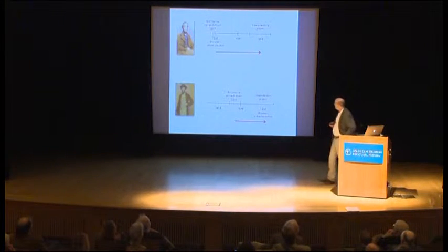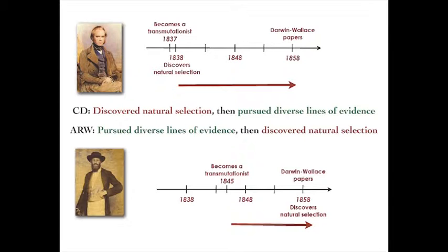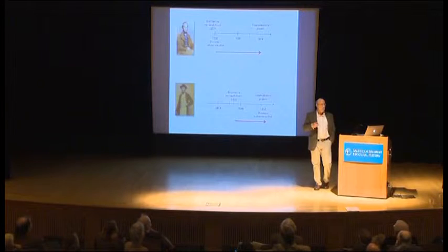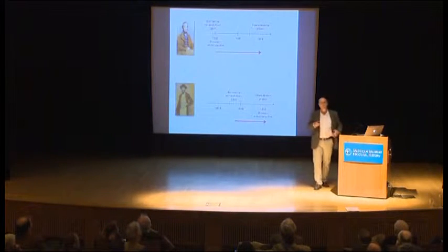But consider their trajectories in more detail. Darwin becomes a transmutationist — their word for evolution — in 1837, some months after returning home from his voyage on the Beagle. But it's not for about another year until he discovers the mechanism behind transmutation. Natural selection is discovered by Darwin in 1838. He then embarks upon a long period of exploration — what I call a consilience mode of accumulating lines of evidence with reference to his theory.